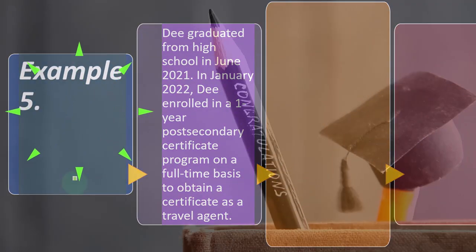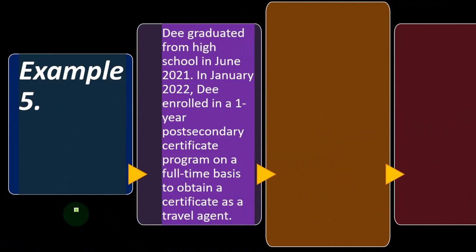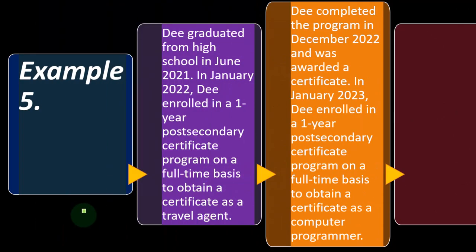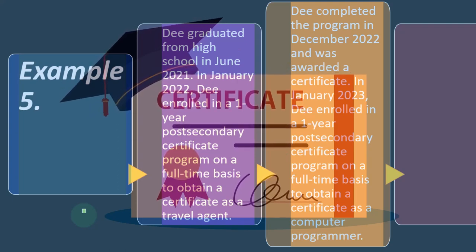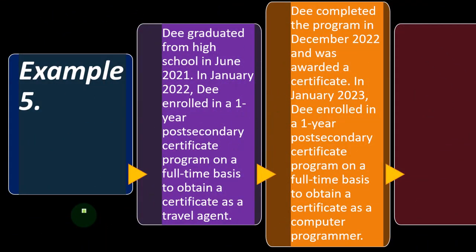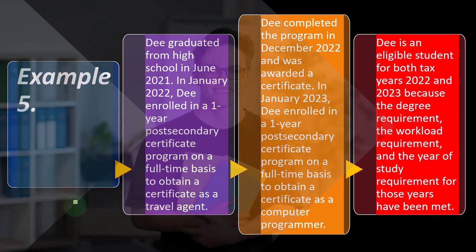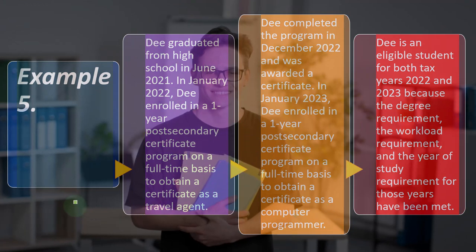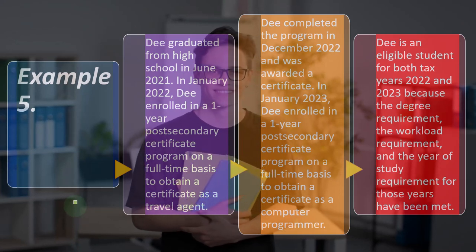Example five: Dee graduated from high school in June 2021. In January 2022, Dee enrolled in a one-year post-secondary certificate program full-time to obtain a certificate as a travel agent, completing it in December 2022. In January 2023, Dee enrolled in another one-year post-secondary certificate program full-time to attain a certificate as a computer programmer. Dee is an eligible student for both tax years 2022 and 2023 because the degree requirement, workload requirement, and year-of-study requirement for those years have been met.